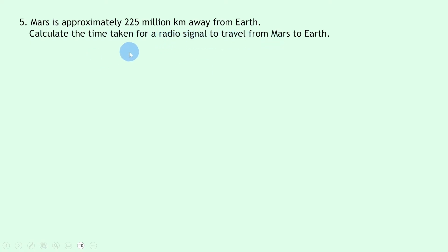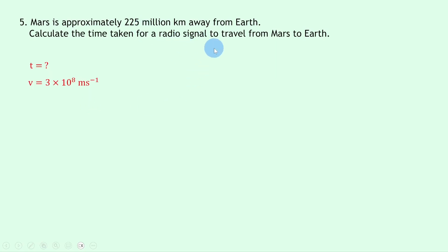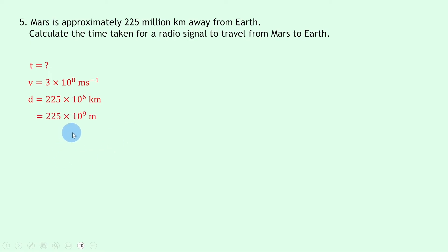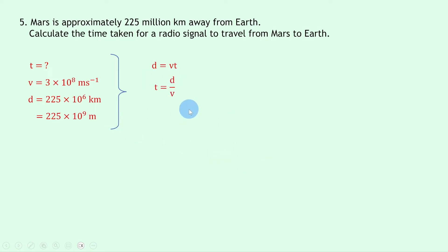Question five says: Mars is approximately 225 million kilometers away from Earth. Calculate the time taken for a radio signal to travel from Mars to Earth. Writing down what we know: we're trying to find the time t; the speed of light v is 3 × 10⁸ meters per second; and the distance d is 225 million kilometers, which is 225 × 10⁶ km, or 225 × 10⁹ meters. The equation is d = vt, rearranging for t: divide both sides by v to get t = d / v.